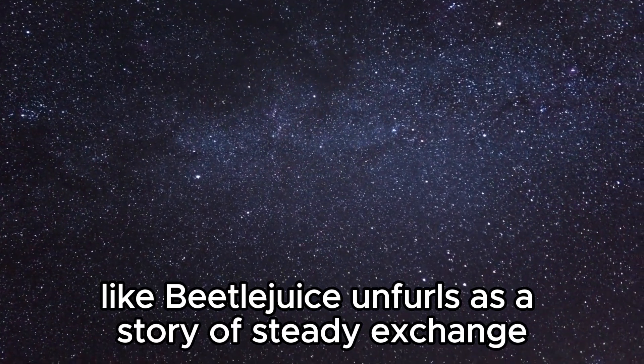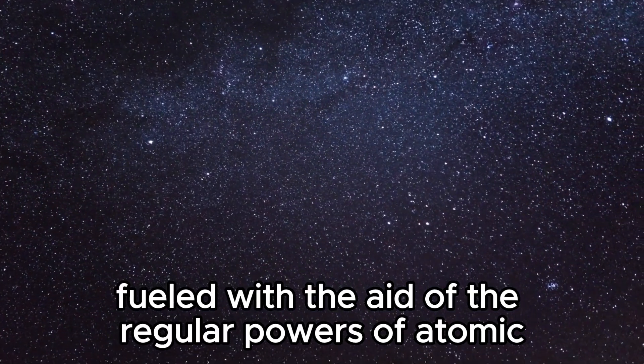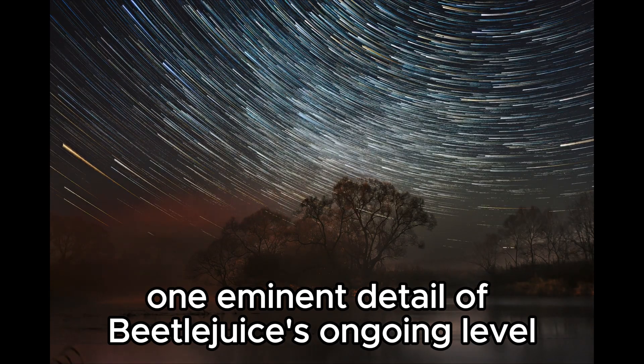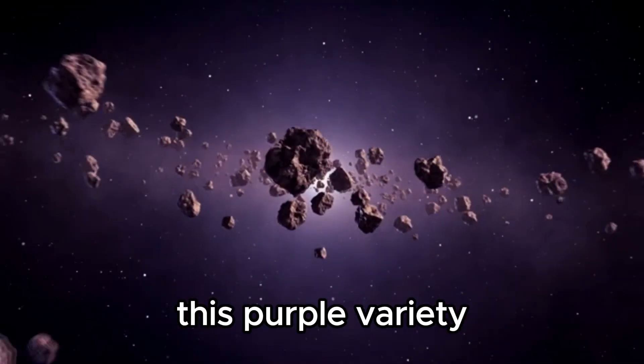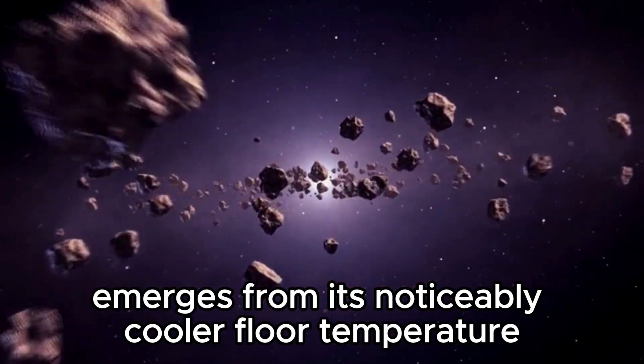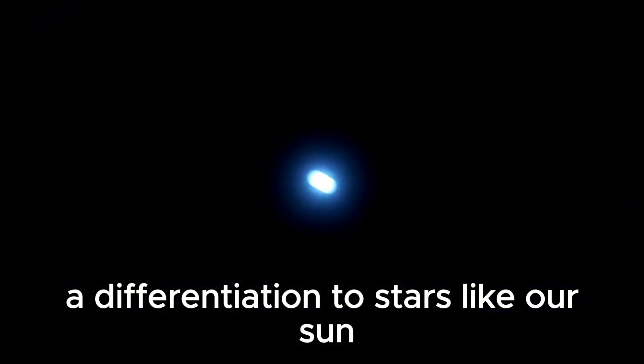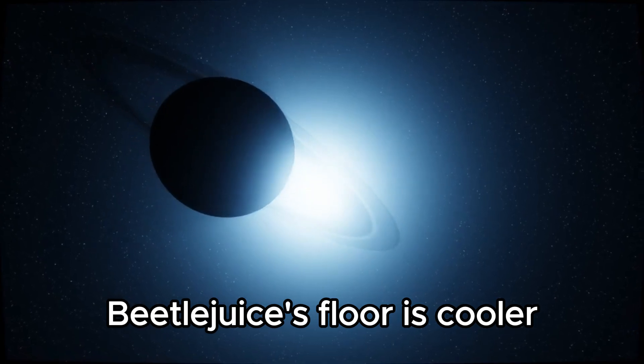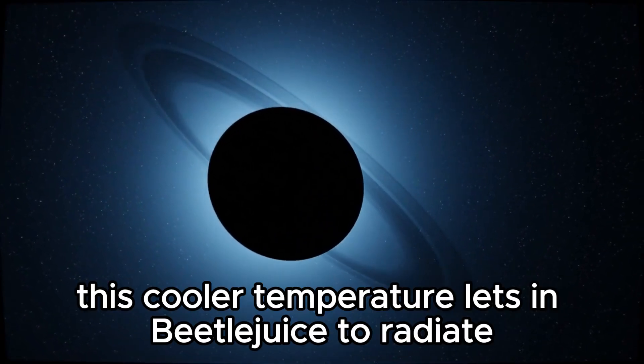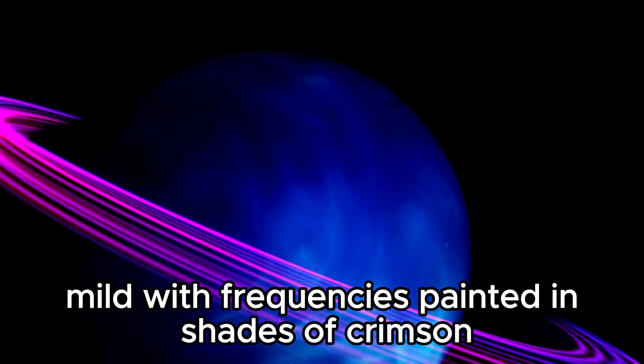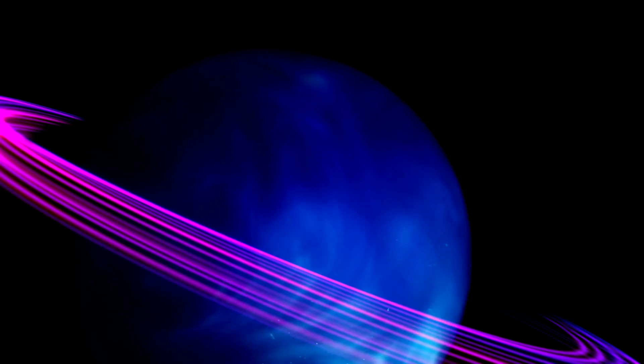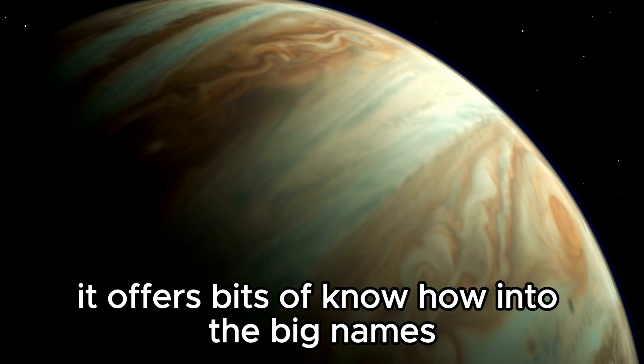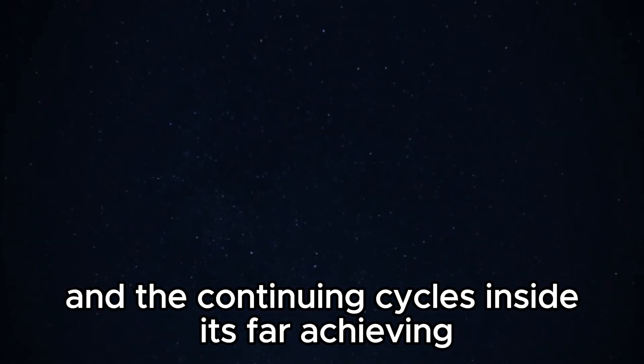The tour of stars like Beetlejuice unfurls as a story of steady exchange fueled by the regular powers of atomic aggregate and gravity. One eminent detail of Beetlejuice's ongoing level is its putting ruddy tone. This purple variety emerges from its noticeably cooler floor temperature. Even as our solar blasts at around 5,500 Kelvin, Beetlejuice's floor is cooler, getting commenced at around 3,500 Kelvin. This cooler temperature lets in Beetlejuice to radiate mild with frequencies painted in shades of crimson. This tone offers bits of know-how into the big name's real country and the continuing cycles inside its far-achieving gaseous area.